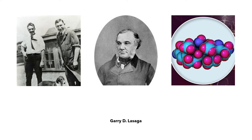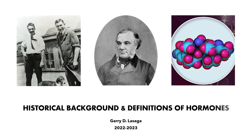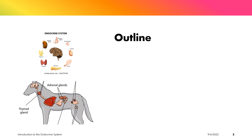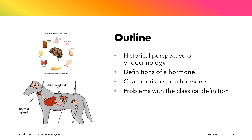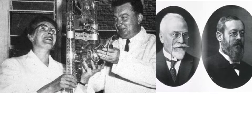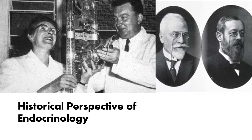Welcome to our presentation on the historical background of endocrinology and some definitions of hormones. This presentation will discuss the historical perspective of endocrinology, some definitions of a hormone, characteristics of a hormone, as well as the problems with the classical definition of a hormone. We are also going to differentiate between a hormone, an enzyme, and a vitamin. The slides to follow will discuss some important figures and scientists renowned for their notable contributions in the field of endocrinology.